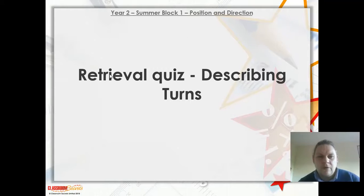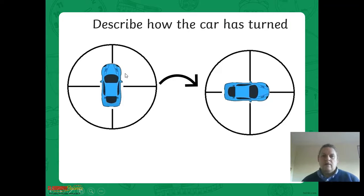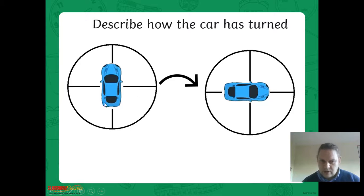Hello everyone, Mr. Shepard here again with some more maths. Our quiz today is to describe turns. Can we describe how this car has turned? If you remember, we talked about clockwise and anticlockwise, and this is the big clue here - this arrow. So the car's turned in this direction - is that clockwise or is it anticlockwise?